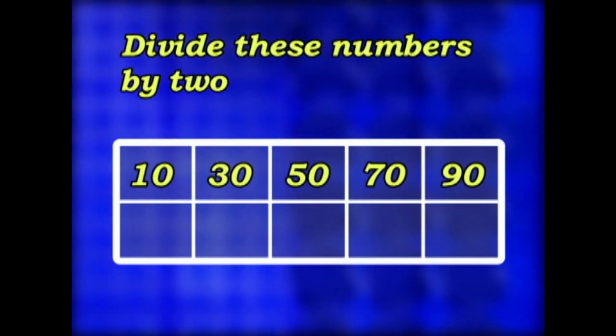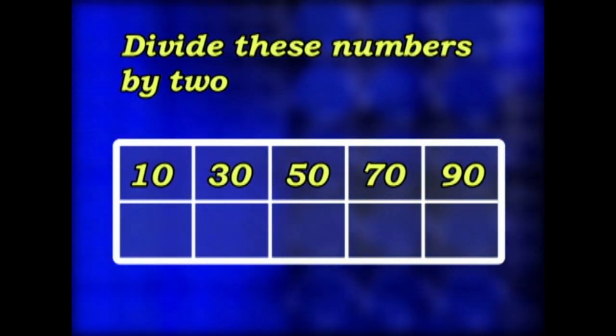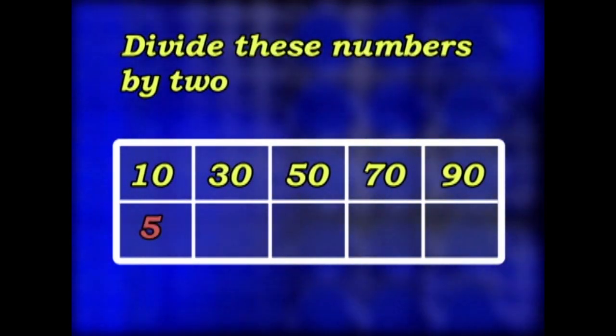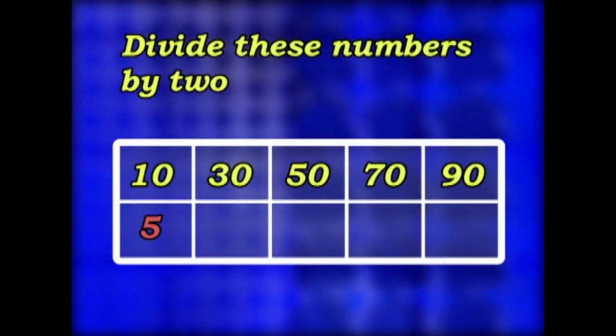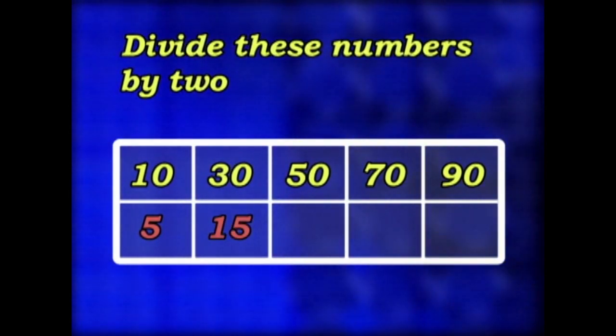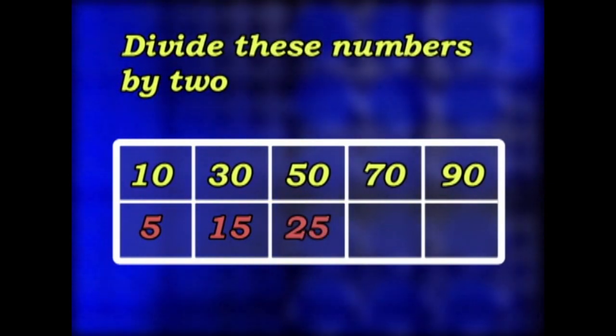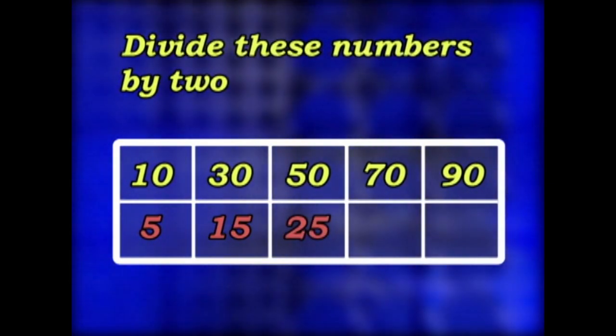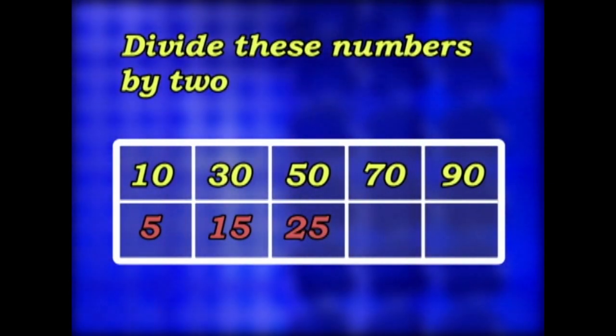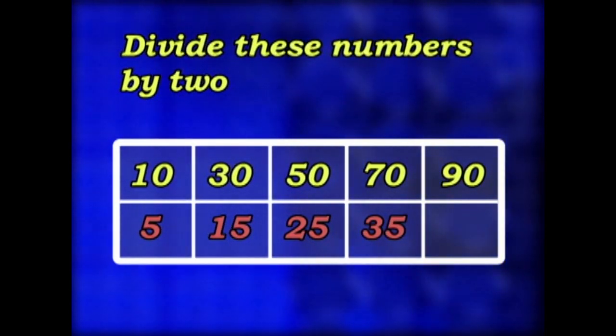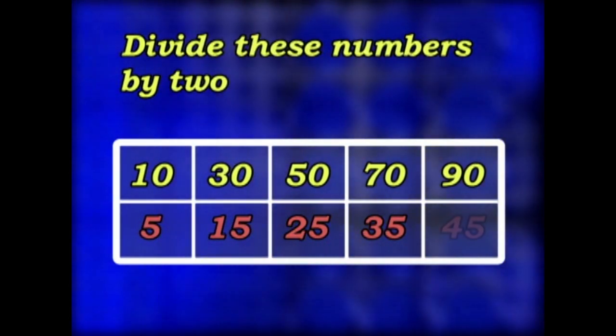10 divided by 2? 5. 30 divided by 2? 15. 50 divided by 2? 25. 70 divided by 2? 35. 90 divided by 2? 45.